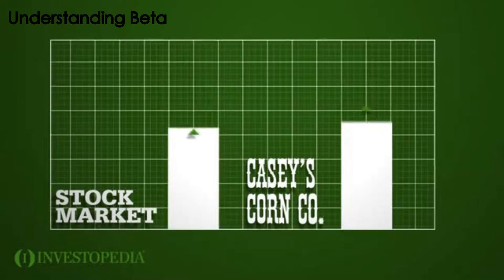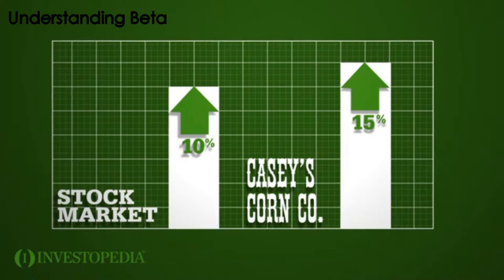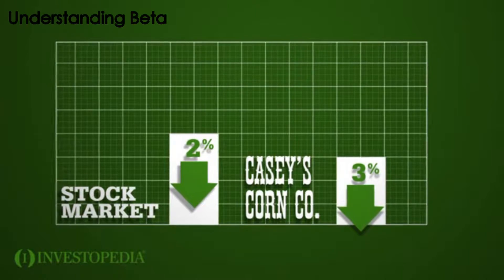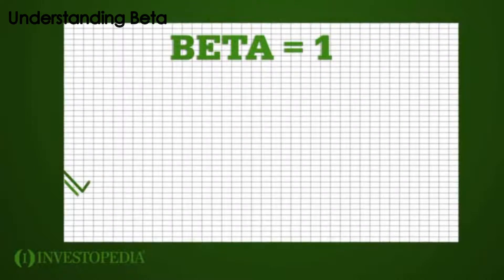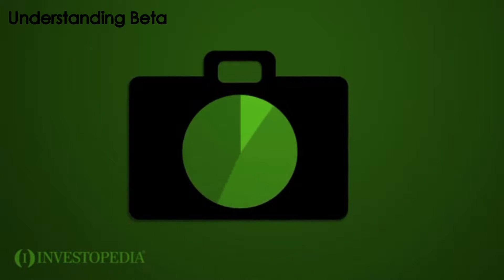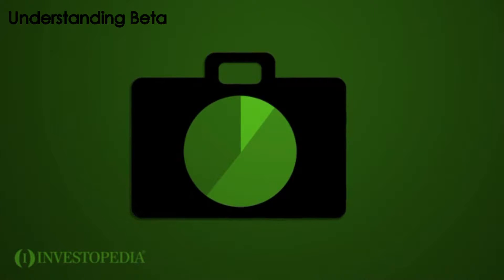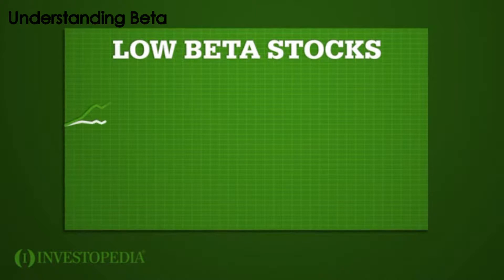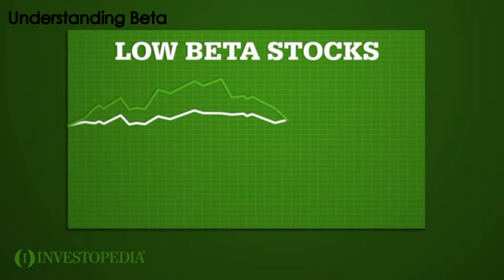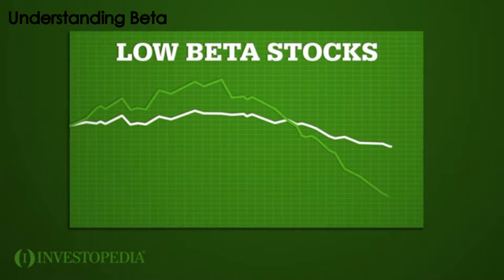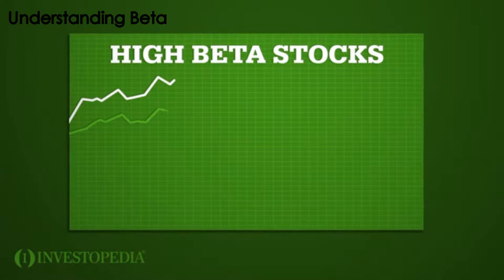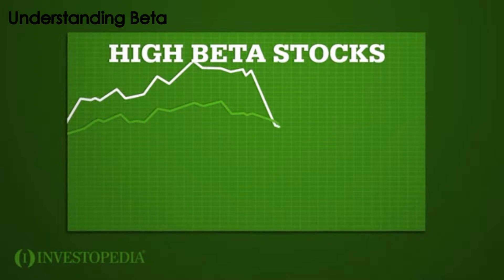A beta of 1.5 means likely gaining fifteen percent when the market gains ten percent, and losing three percent when the market drops two percent. A stock with a beta of one moves in tandem with the wider market. Both low and high beta stocks have their place in a portfolio. Low beta stocks are stable — weaker than the market when stocks are strong, but experiencing less dramatic declines when markets drop. High beta stocks are the opposite: they outperform when the market is strong and fall further when it declines.